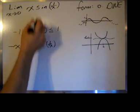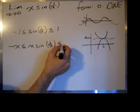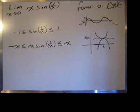This is the function we want right here. It's the one we're looking at. And then we'll multiply 1 by x. We just multiply the inequality through by x.